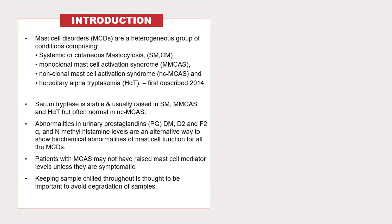So what are the mast cell disorders? They include systemic and cutaneous mastocytosis, monoclonal and non-clonal mast cell activation syndrome, and the most recently described hereditary alpha tryptasemia. When thinking about biomarkers, serum tryptase is the easiest to measure because it's a stable substance. It is usually raised in systemic mastocytosis, monoclonal MCAS and hereditary alpha tryptasemia, but is often normal in non-clonal MCAS. Abnormalities in the levels of urinary prostaglandins and N-methylhistamine are an alternative way to demonstrate abnormalities of mast cell activity for all of the mast cell disorders.